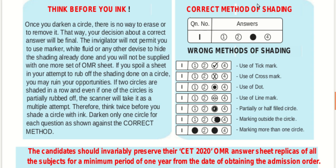Darken only one circle for each question as shown in the correct method. The correct method is to completely shade the circle — for example, if the answer is three, completely shade that circle without dots in between. Using ticking marks, cross marks, a small circle at the center, line marks, partially filled circles, or marking outside the circle are all wrong methods. Marking more than one circle is also a wrong method.